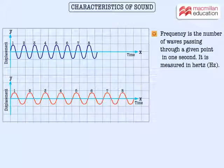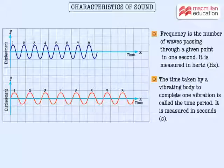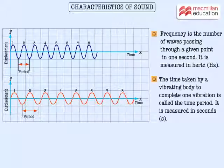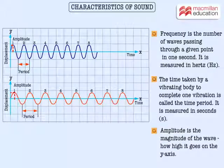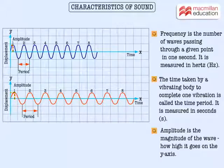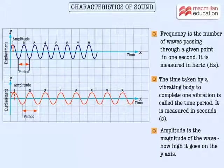Let's now understand the meaning of frequency, time period, and amplitude of a wave. Frequency is the number of waves passing through a given point in one second; it is measured in hertz. The time taken by a vibrating body to complete one vibration is called the time period; it is measured in seconds. Amplitude is the magnitude of the wave — how high it goes on the y axis.